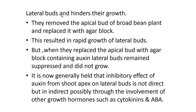Lateral buds hinder their own growth under high auxin. When researchers removed the apical bud of a broad bean plant and replaced it with an agar block, lateral buds grew rapidly. But when they replaced it with an agar block containing auxin, lateral buds remained suppressed. It is now generally held that the inhibitory effect of auxin on lateral buds is indirect, possibly through the involvement of other hormones such as cytokinins and abscisic acid.